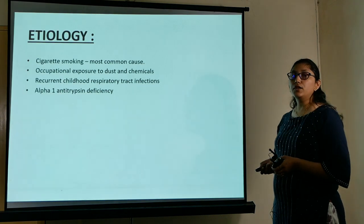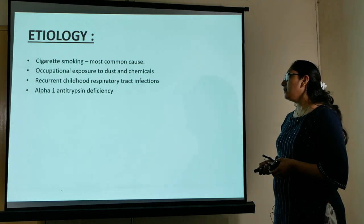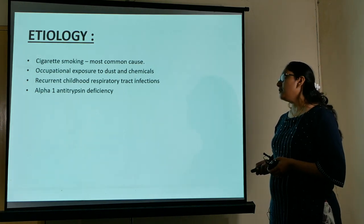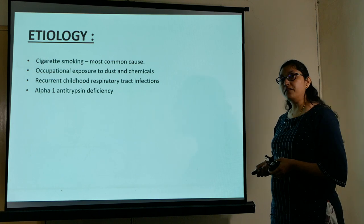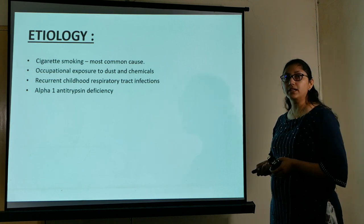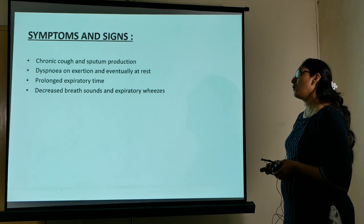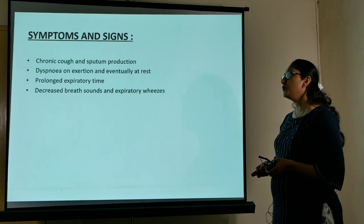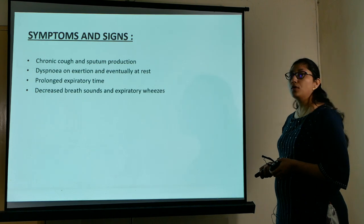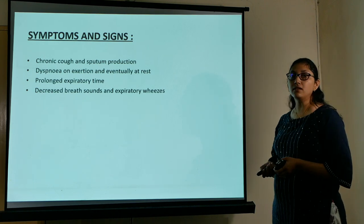The most common etiology is smoking, followed by occupational exposure, recurrent respiratory tract infections in childhood, and alpha-1 antitrypsin deficiency. Symptoms include chronic cough and sputum production, dyspnea on exertion, prolonged expiratory time, decreased breath sounds, and wheezes.